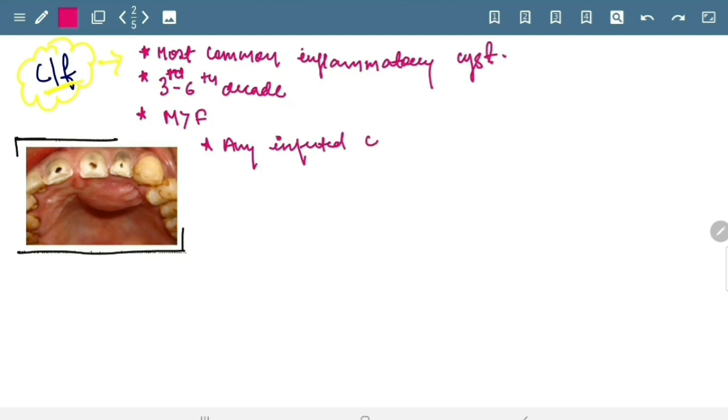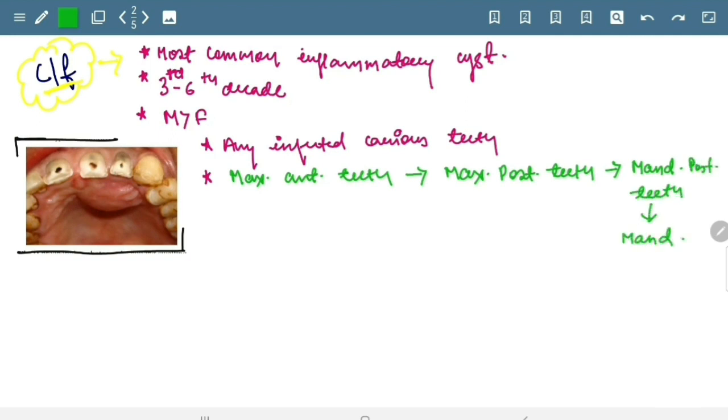Any infected carious teeth. Okay, now we will discuss its order in which it is found. So it is predominantly found in maxillary anterior teeth, followed by maxillary posterior teeth, followed by mandibular posterior teeth, followed by mandibular anterior teeth.